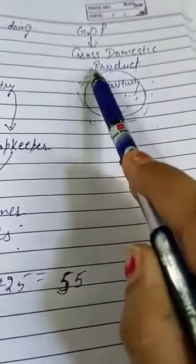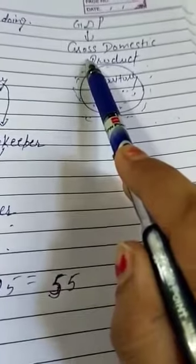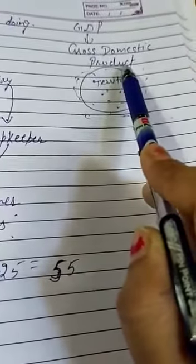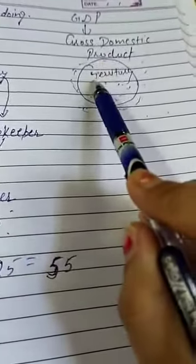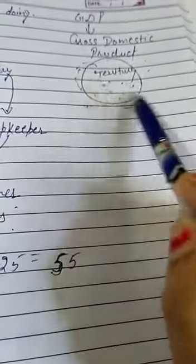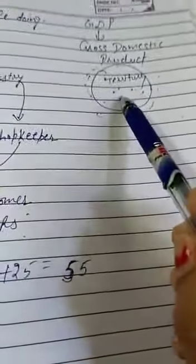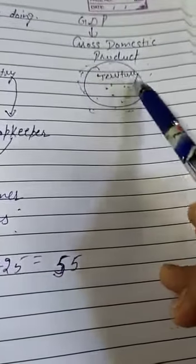Gross means total. And domestic - this is our country. This is the territory, this is the country. What is in the country? What is the territory?